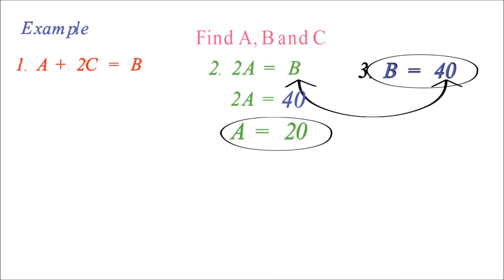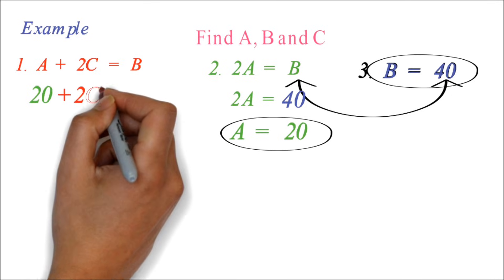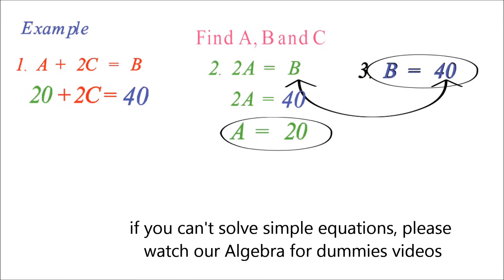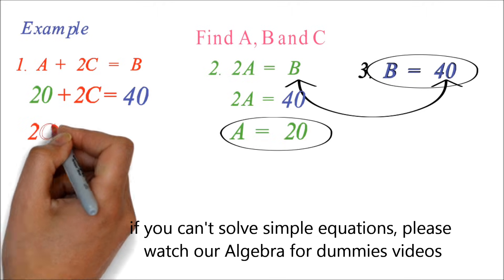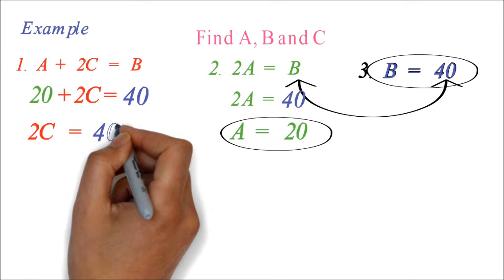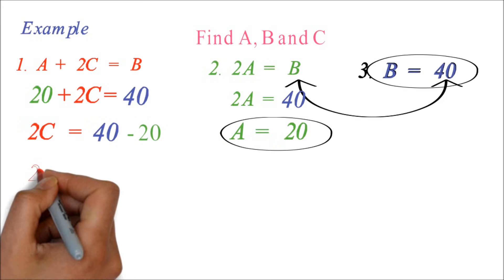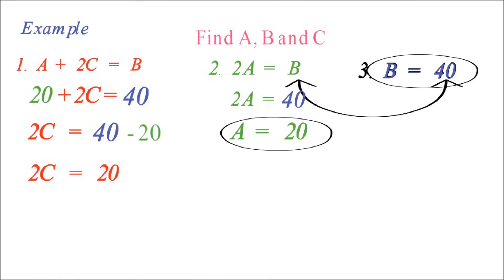We have 20 plus 2C equals 40. We know how to do this simple equation. We move the 20 to get 2C equals 40 minus 20. 2C equals 20. C equals 10.